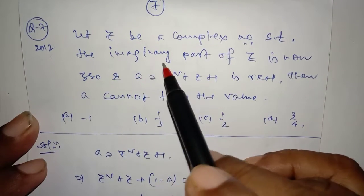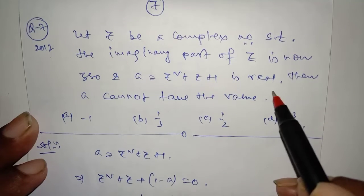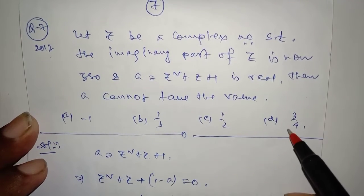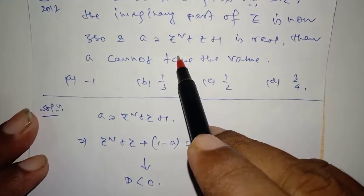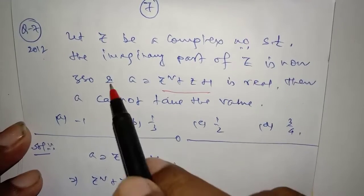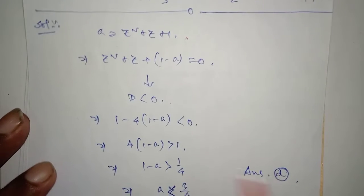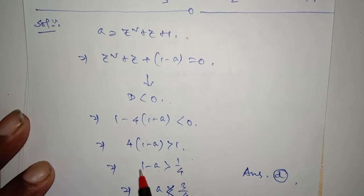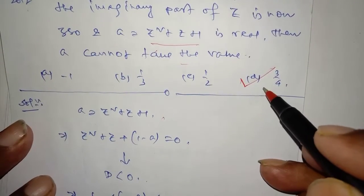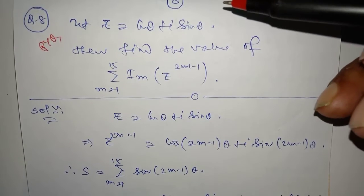This is PYQ JEE Advanced 2012. Let Z be a complex number such that the imaginary part of Z is non-zero and A equals this expression is real. Then A cannot take which value? Make this a quadratic equation in Z. Since the imaginary part of Z is non-zero, Z gives imaginary roots when the discriminant D is less than zero. D less than zero means B squared minus 4AC is less than zero: 1 minus A is greater than 4A, so 1 is greater than one-fourth. Therefore A cannot take the value 3/4 — values less than 3/4 are possible but 3/4 itself is not.